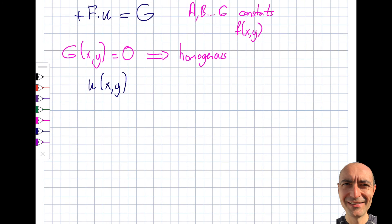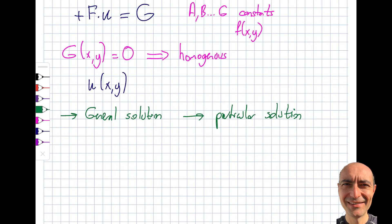In ODEs we focused on finding the general solution, but for PDEs that's really not the goal. The goal is to find a particular solution, which means we will have some boundary values — this is called a boundary value problem. In physics we mostly encounter boundary value problems, and the solution is the particular solution.